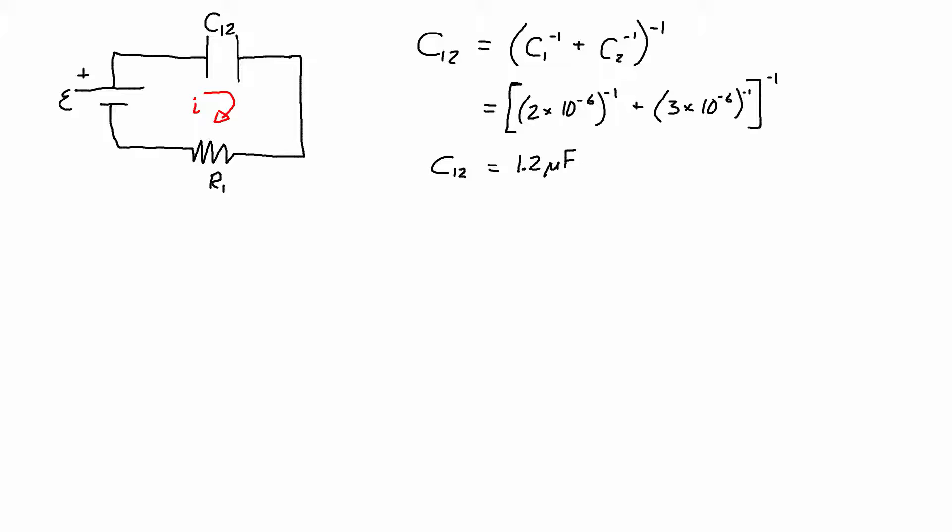Now I can write the charging equation for the simplified circuit. So I have Q12 as a function of time is equal to C12 times the EMF times 1 minus E to the negative T over R1 C12.